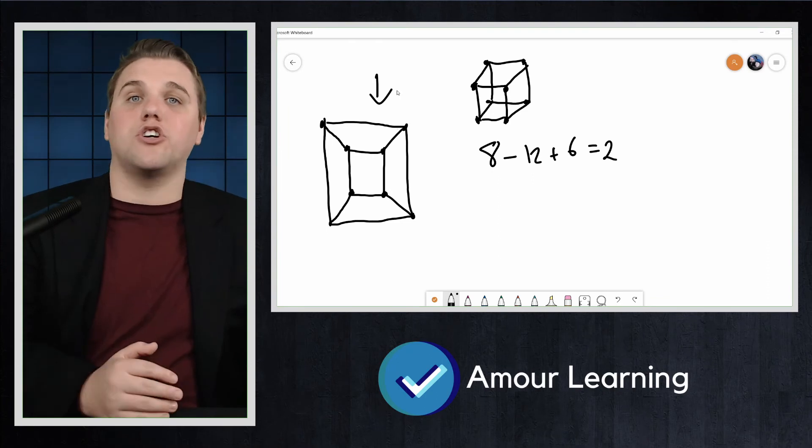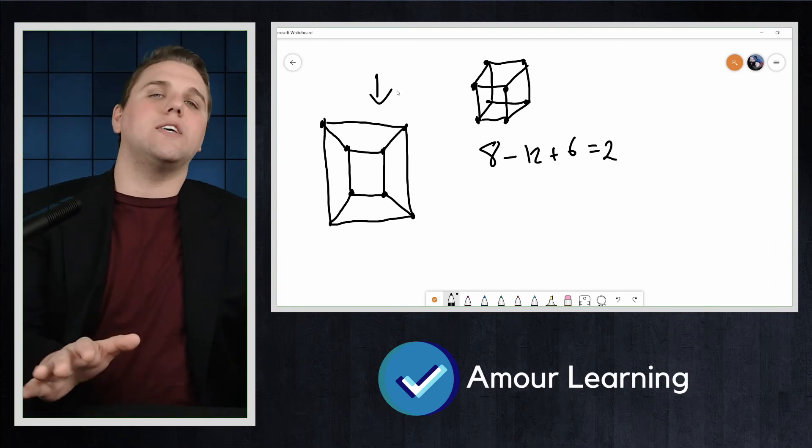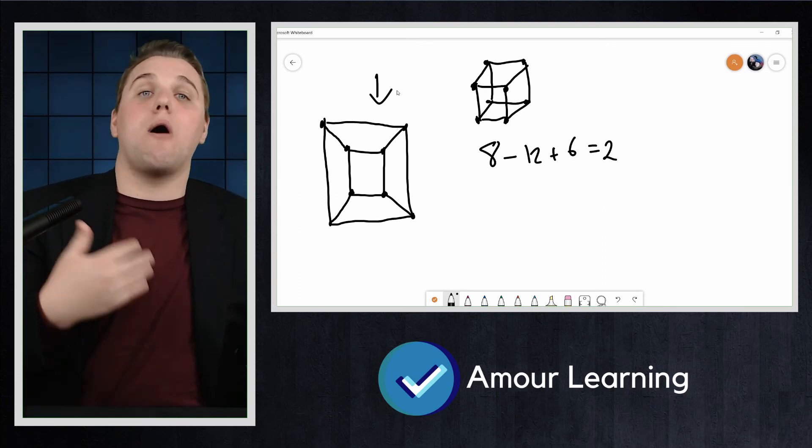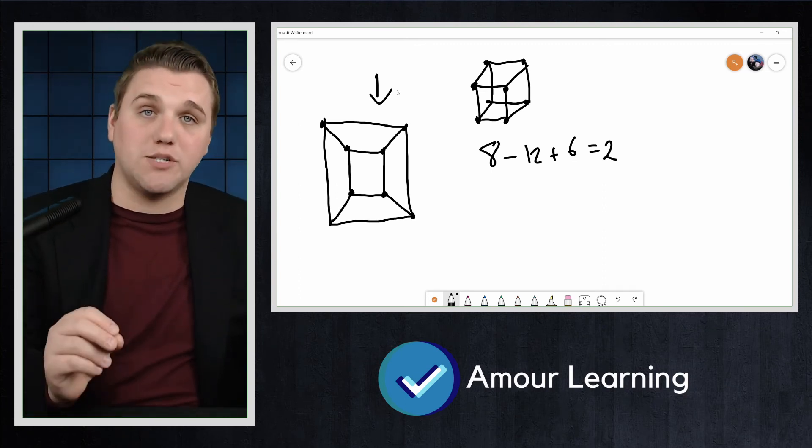That face that was punctured becomes the outside face of the planar graph. The point is, we can apply what we know about graphs, in particular planar graphs, to convex polyhedra.